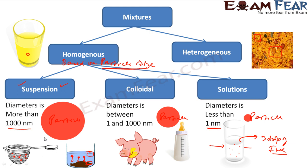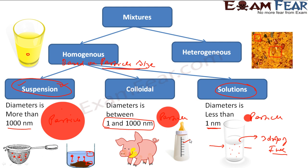In between solution and suspension there is something called colloidal. Here the particle sizes are between those of suspension and solution — neither very big nor very small. Their particle size diameter is 1 to 1000 nanometers. Since they are in between suspension and solution, they have unique properties. A good example is milk in water or fog. They show the Tyndall effect, which we will talk about throughout this chapter.